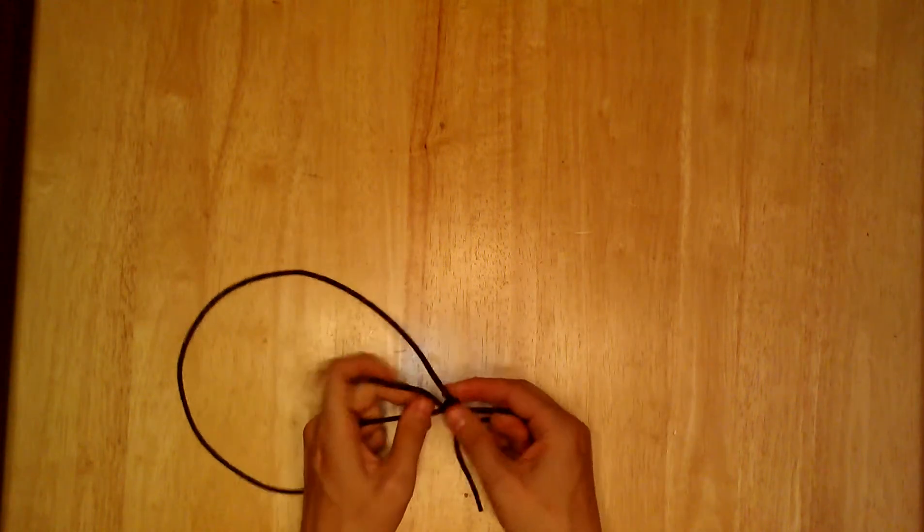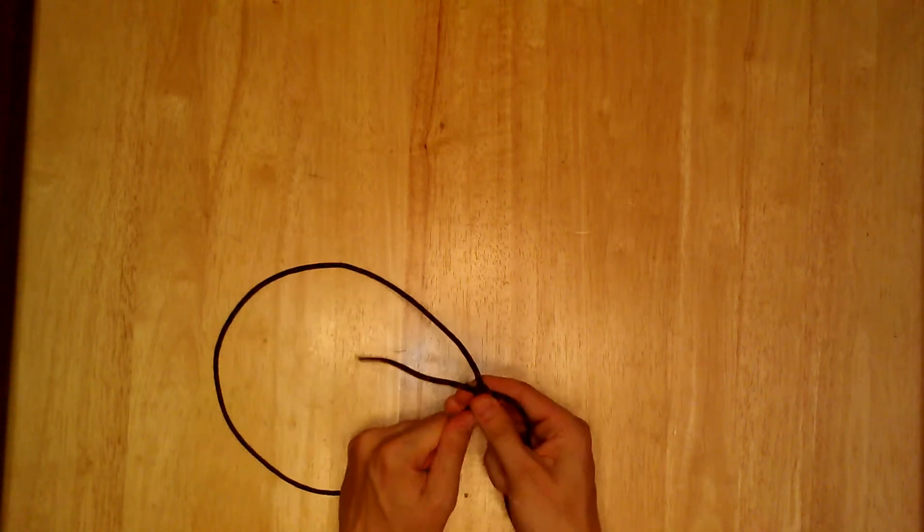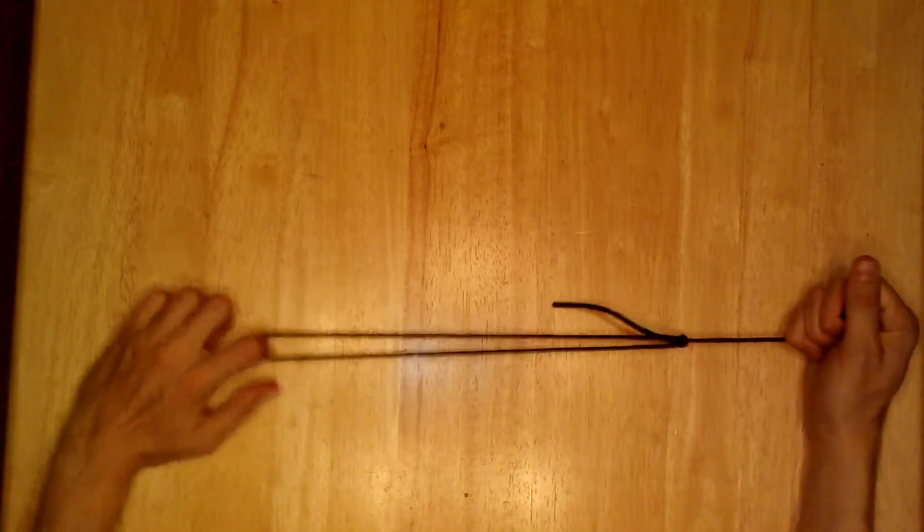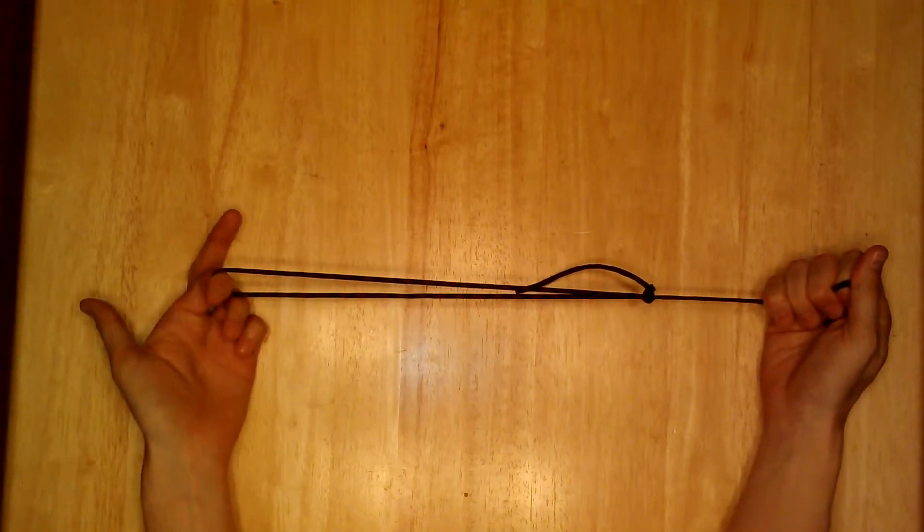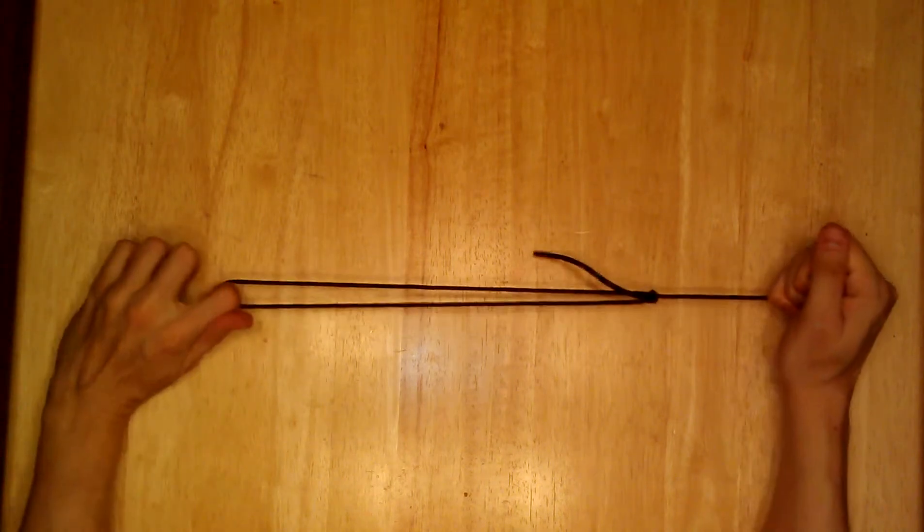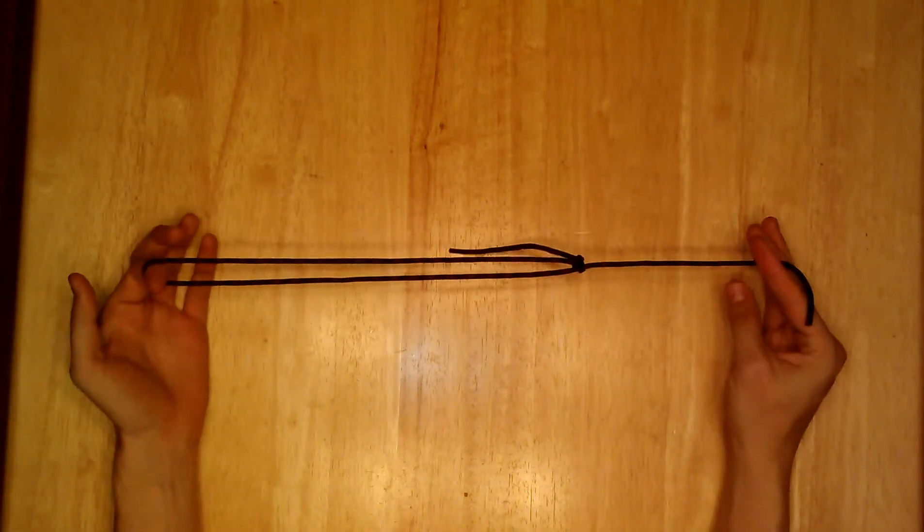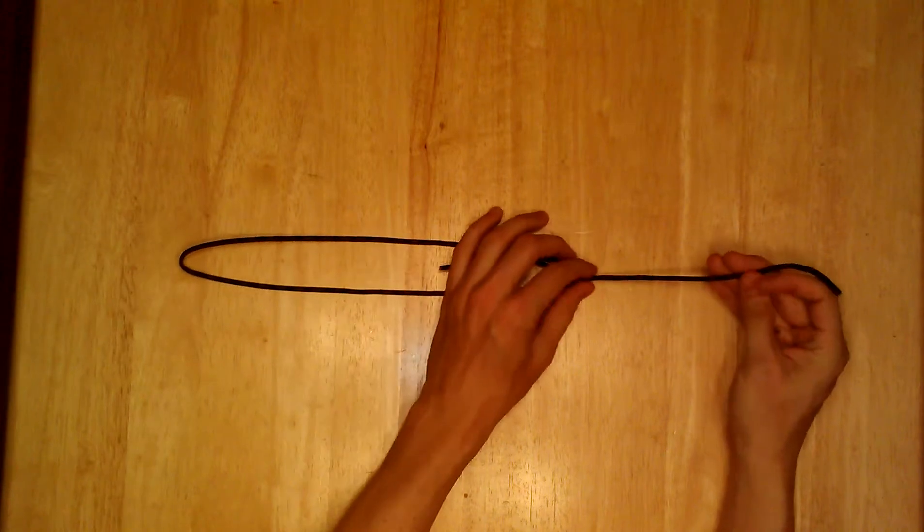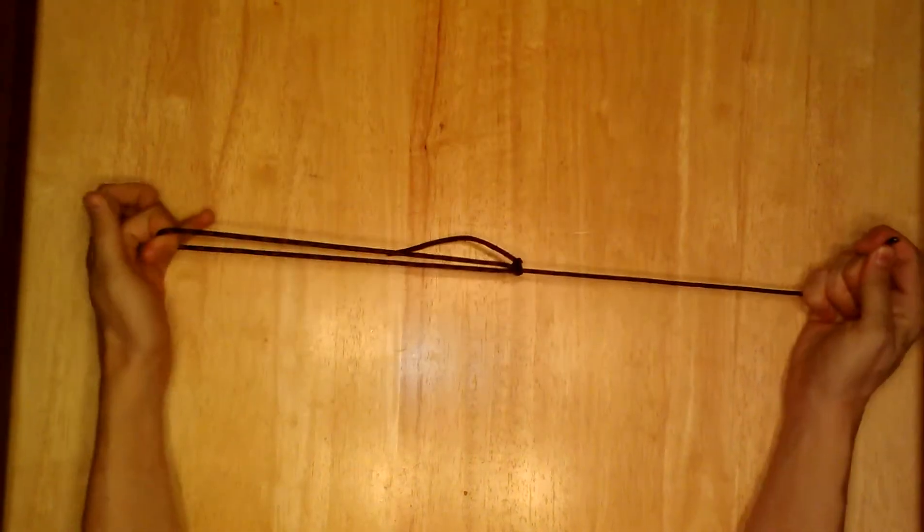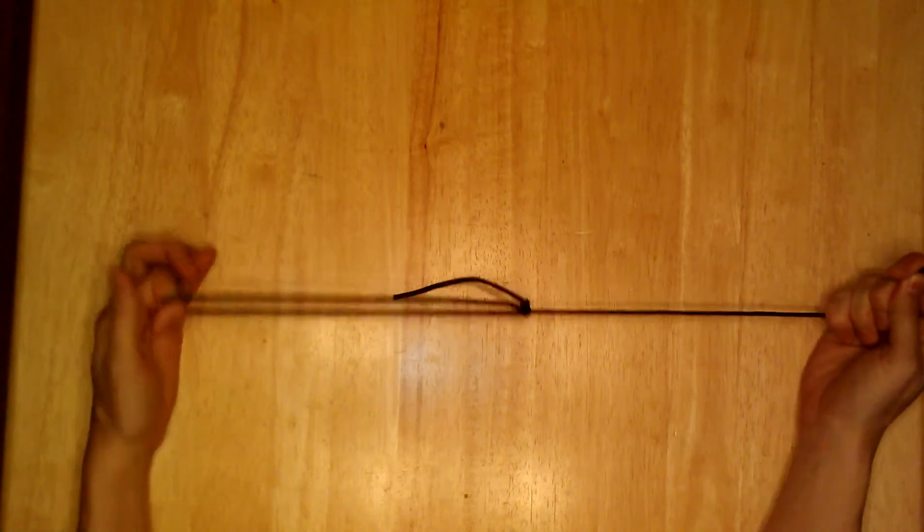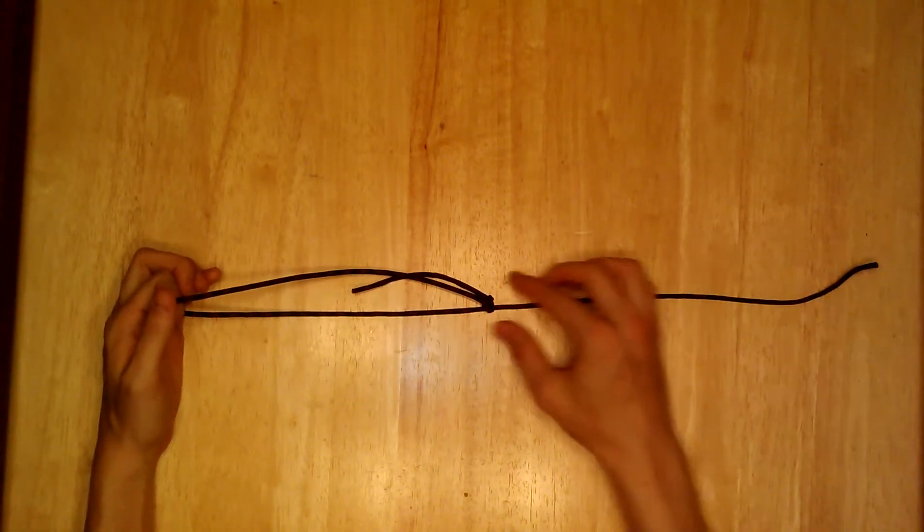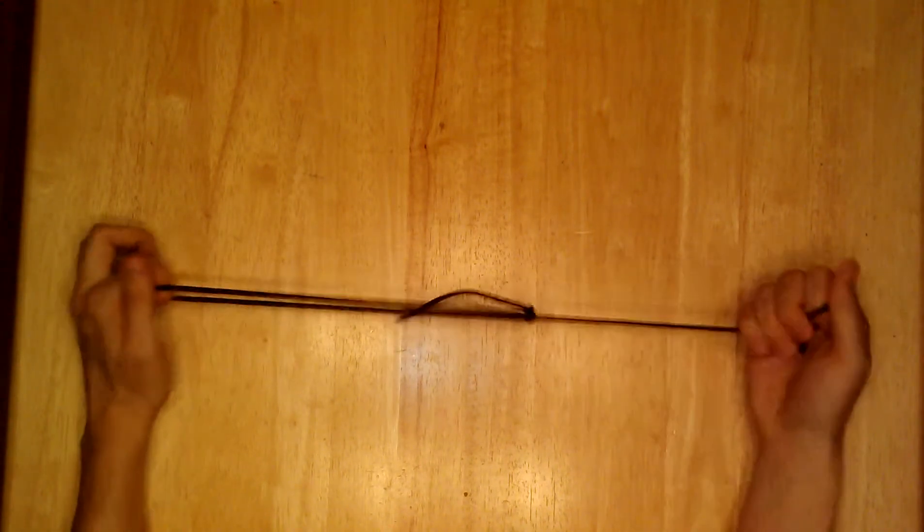Which creates a lot more tension and friction and does not allow it to self-tighten. And what's useful about this particular knot is that it creates an adjustable length. So you can have this tied onto something and if you need to tighten it, just pull up on this knot right there.